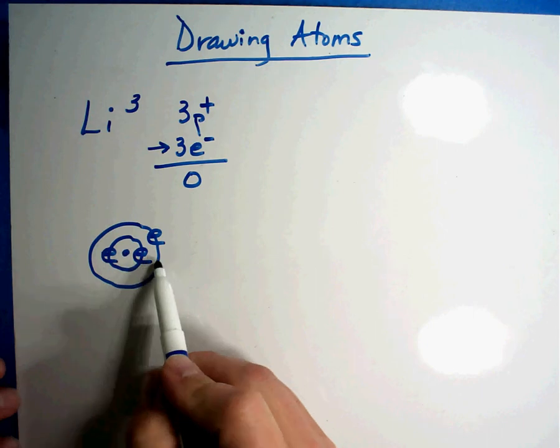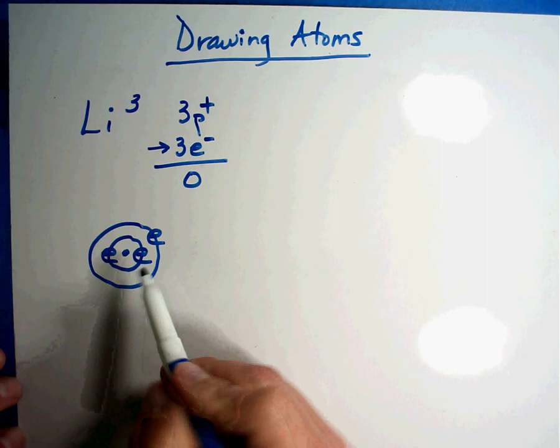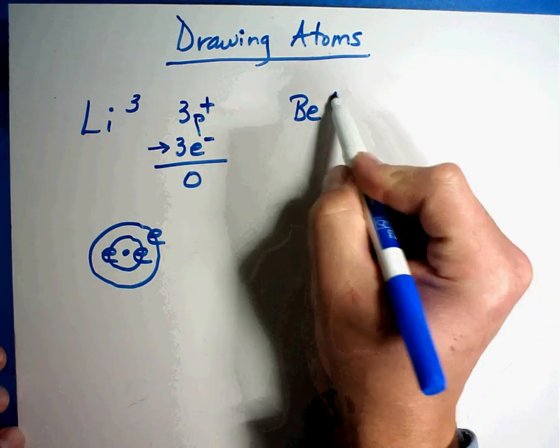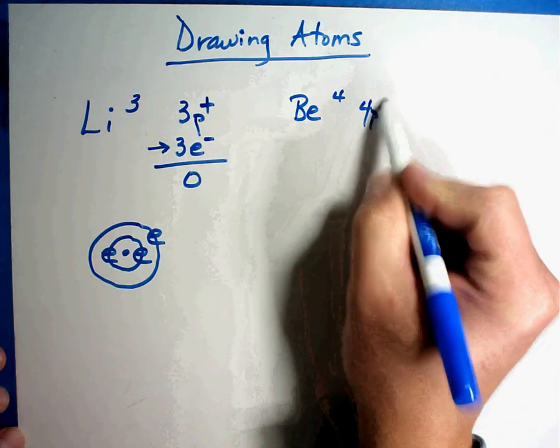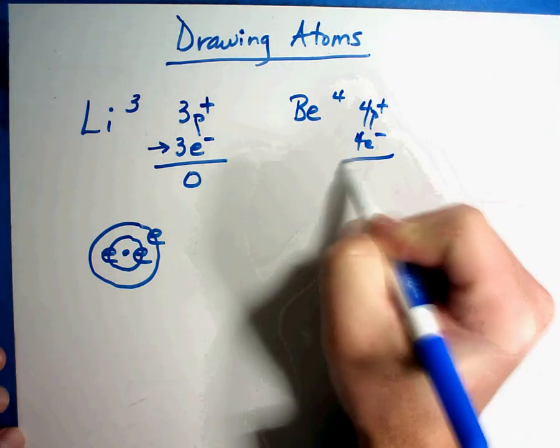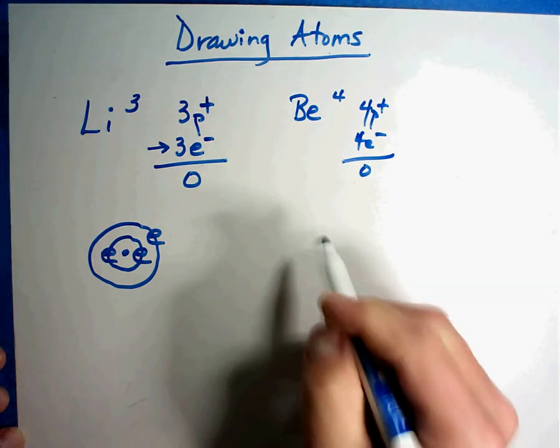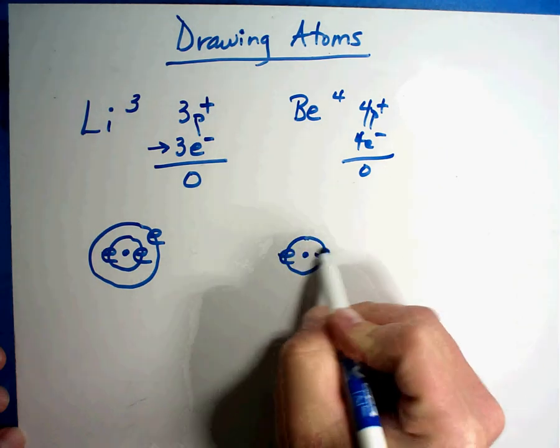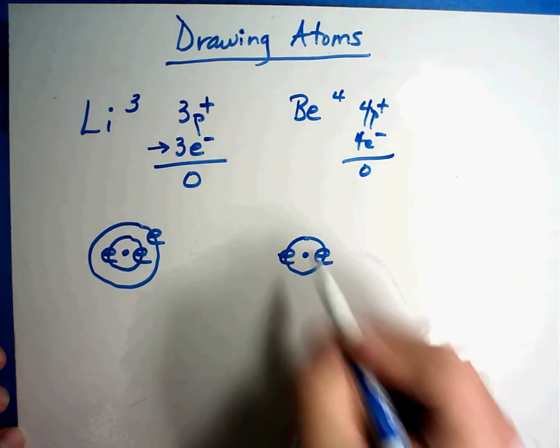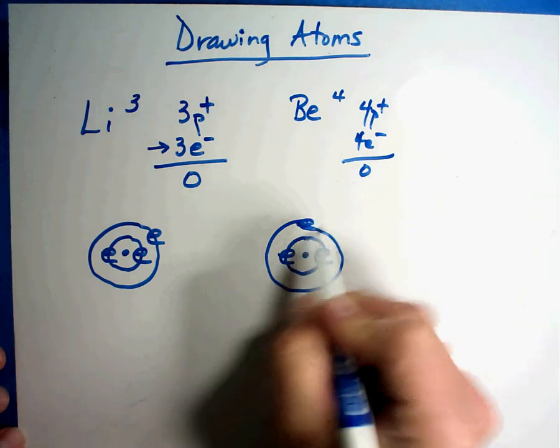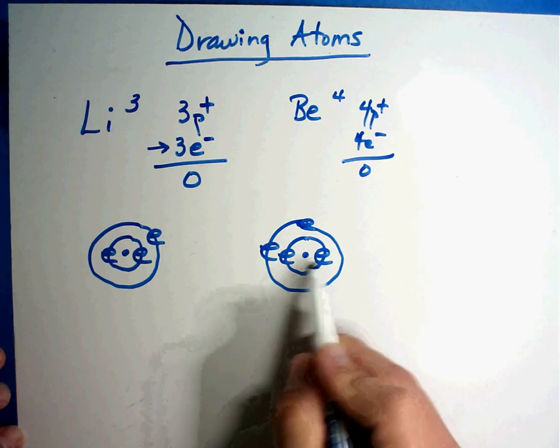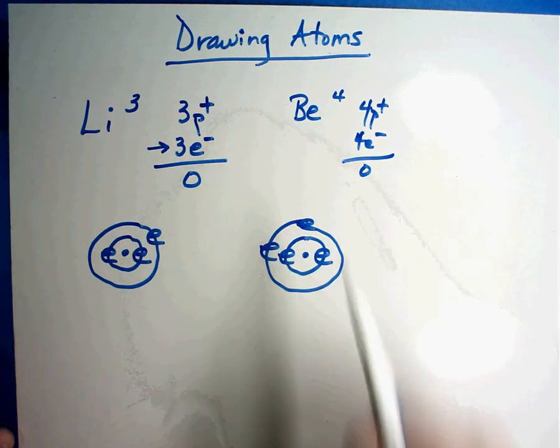Now the first ring is full, second ring is not anywhere close to full. First ring can hold two, second ring can hold eight. It would need a whole lot more to be full, but that's what this atom looks like. If we move over one element to beryllium, beryllium is element number four, so it has four protons and four electrons. It's neutral also. So this atom would be one, two in the first and two in the second. Doesn't matter where you put those electrons, but there they are: two in the first, two in the second.